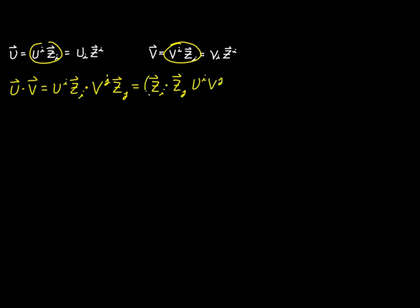We'll group the vector values out front and carry on with the remaining components u^i and v^j. This expression is nothing but the covariant metric tensor — that's just the definition for z_ij — leaving us with the factors u^i and v^j. So there's an expression for the dot product between u and v.